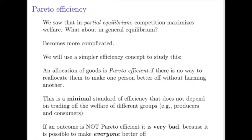What it doesn't do is trade off between who's gaining from the trade. Much like the notions of welfare we discussed earlier, it doesn't really have any notions of equity built into it. But what we can say is that if you don't meet this minimal standard for efficiency, that's a pretty bad allocation — because if your allocation isn't even Pareto efficient, that means there's a way to make every single person better off. So that initial allocation is not a very good one. That's what we're going to use as our concept of efficiency.